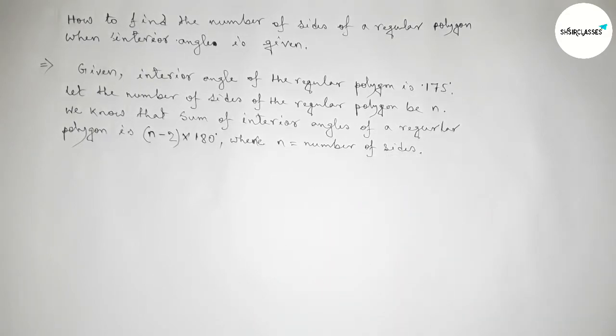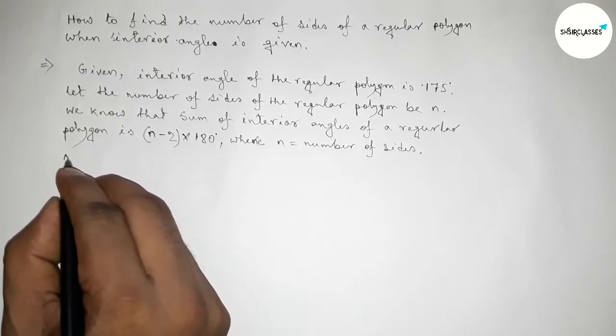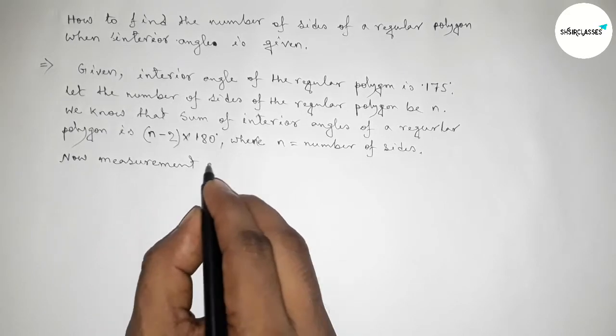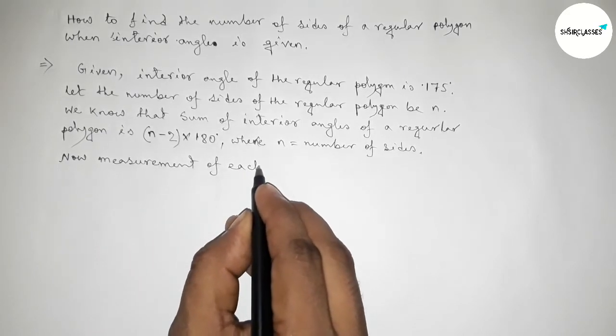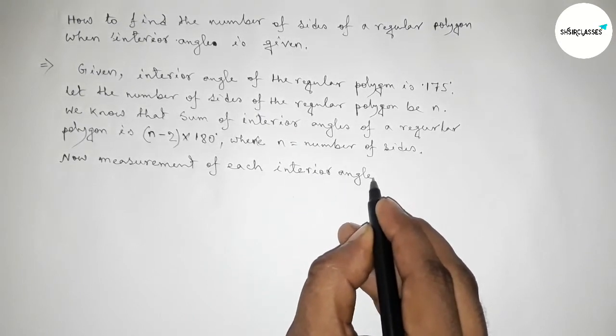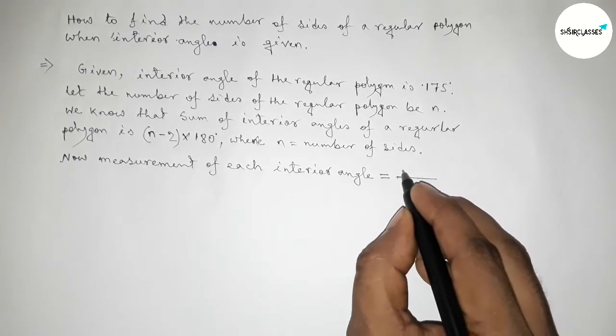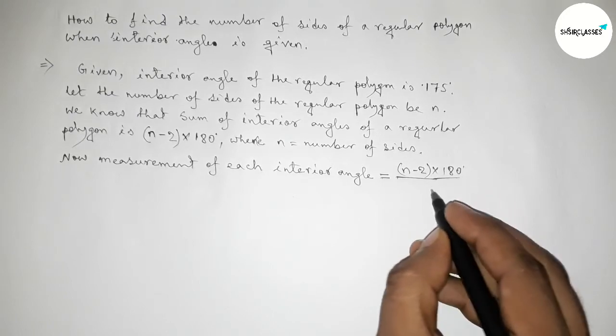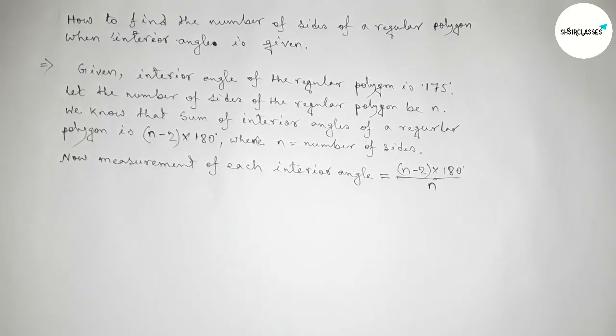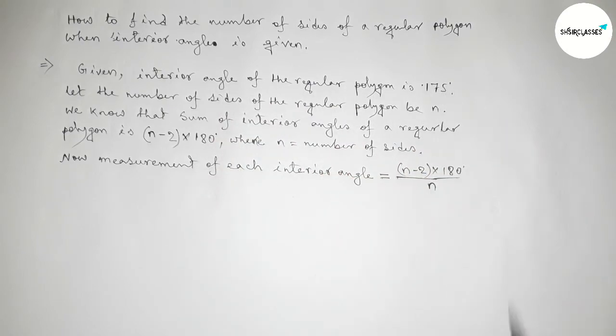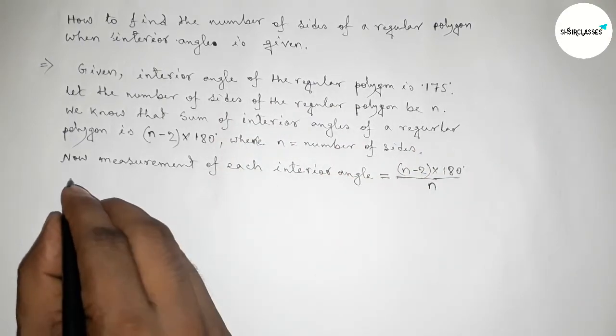Now I'm going to find the value of each interior angle. The measurement of each interior angle of a regular polygon equals to (n - 2) × 180 divided by n. And here the value of each interior angle equals to 175 degrees.